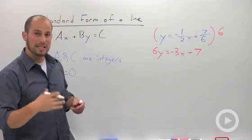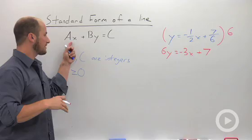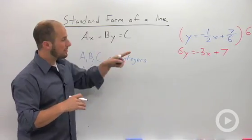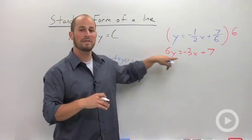Next thing we need to do is make sure our coefficient on x is actually positive. So right now it's negative which means we have to bring it over to the other side.